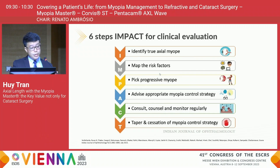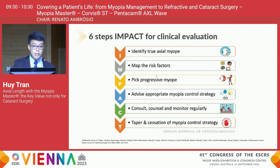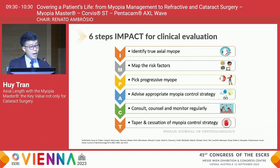Recently, evidence suggests six steps for clinical evaluation in children with myopia. The very first key step is to identify the true axial myopes, which proves the central role of axial length in the development and progression of myopia. Another reason is that excessive axial elongation has been proven to be highly associated with a higher risk of visual impairment in later phases of life.